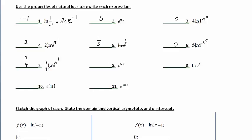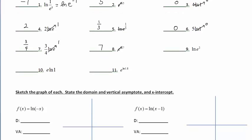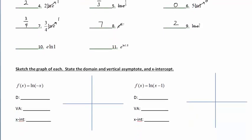Number 8: natural exponential, natural log, immediate back-to-back operations, undo each other. The answer is 7. Number 9: natural log, natural exponential, undo each other. The result, I'm left with 2. Problem 10: notice this is e times the natural log of 1. The natural log of 1 from the graph is 0. 0 times anything is 0. Problem 11's answer is 1.8.